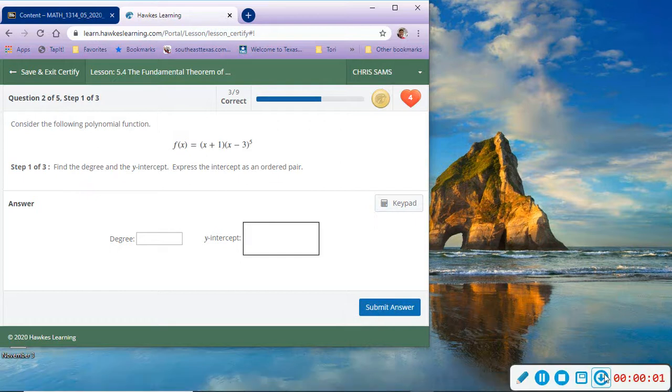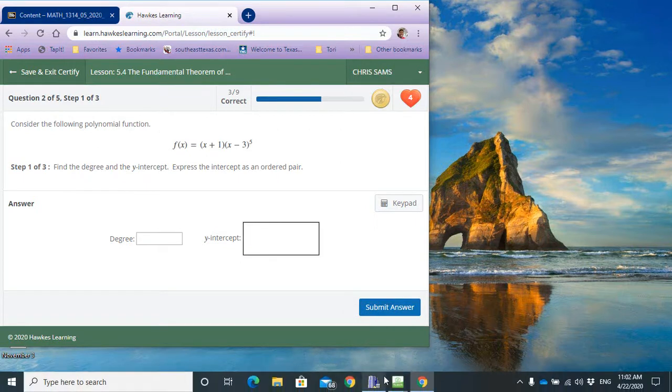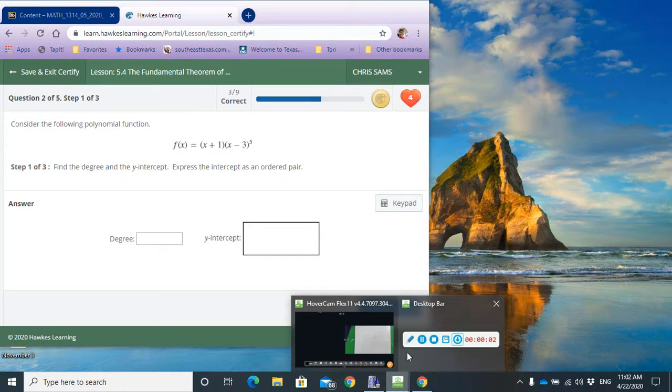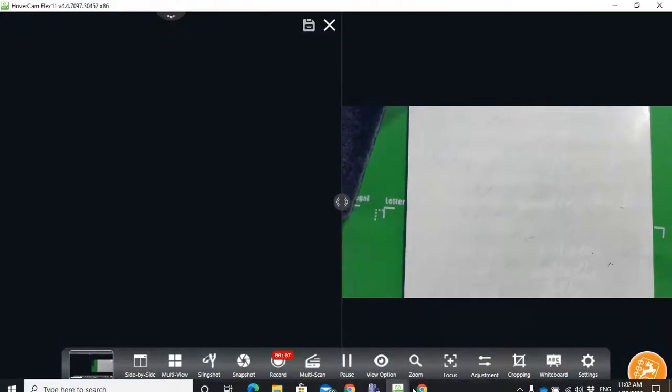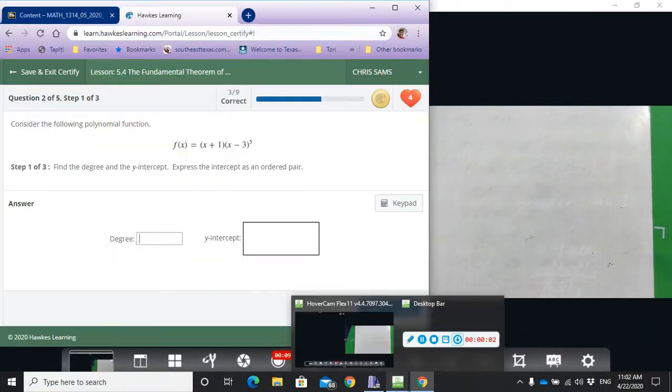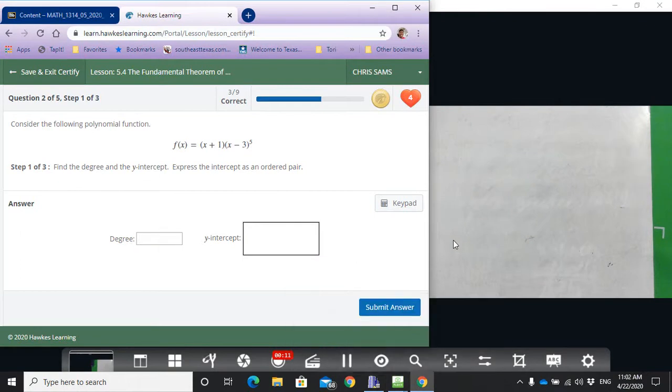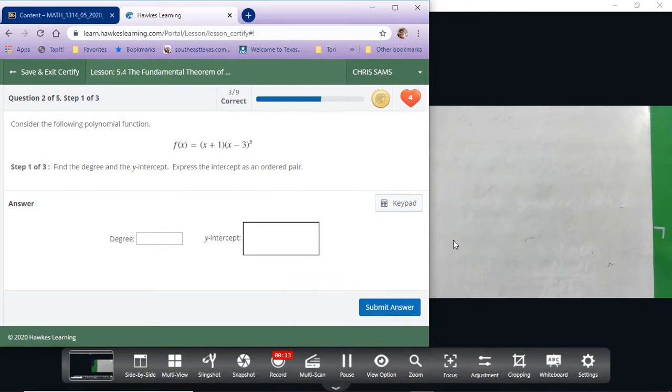Alright, number two. We're going to be doing the same thing: finding degree and listing where it flattens out and the number of zeros. So the degree, again, we're going to count the number of variables we have.